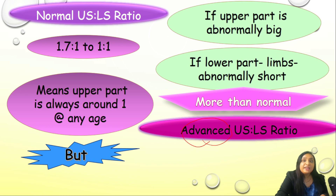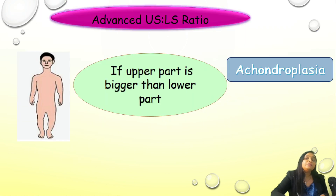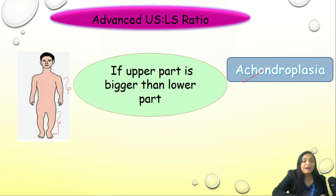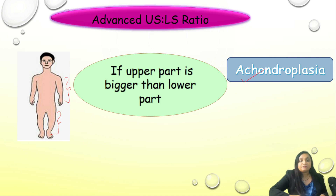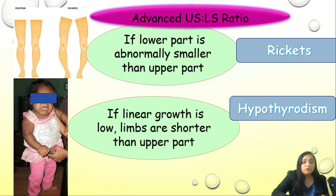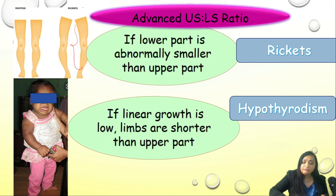Conditions with an issue with the lower limbs include: first, achondroplasia — a genetic autosomal dominant condition with a FGFR3 issue, where formation of long bones like legs and arms is disturbed while the torso is relatively normal. It is also called short limb dwarfism and gives an elevated US:LS ratio. Second, rickets (vitamin D deficiency) causes bowing of the legs, making the lower part abnormally shorter and also resulting in an elevated upper to lower segment ratio.